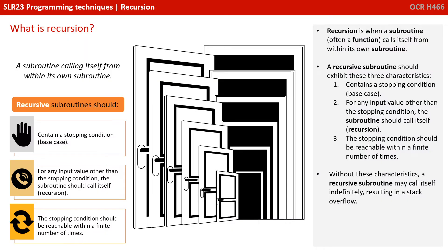So let's start with the obvious question: what is recursion? Recursion is when a subroutine, often a function, calls itself within its own subroutine. A recursive subroutine should exhibit three characteristics: it should contain a stopping condition, sometimes known as a base case; for any input value other than the stopping condition, the subroutine should call itself — this is the act of recursion; and finally, the stopping condition should be reachable within a finite number of times. Without these characteristics, a recursive subroutine may call itself indefinitely, resulting in a stack overflow.